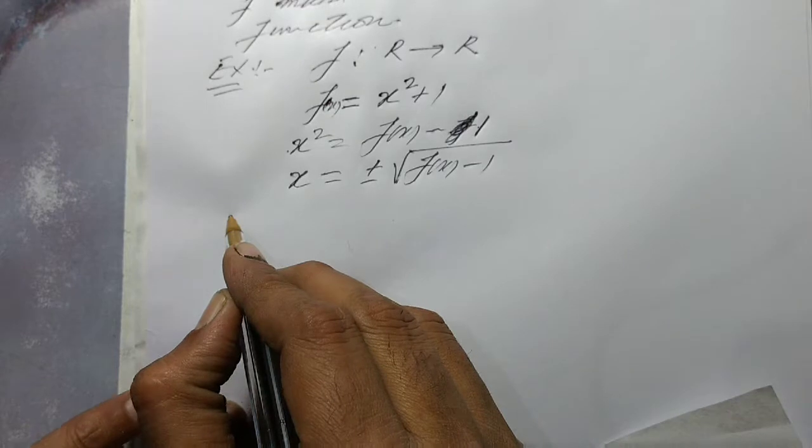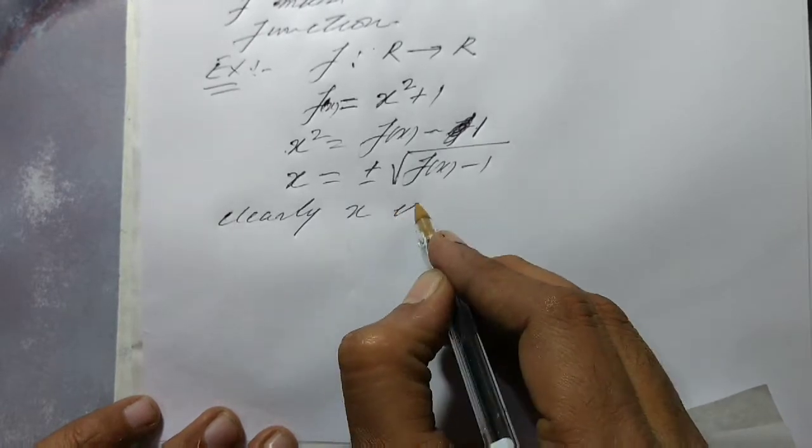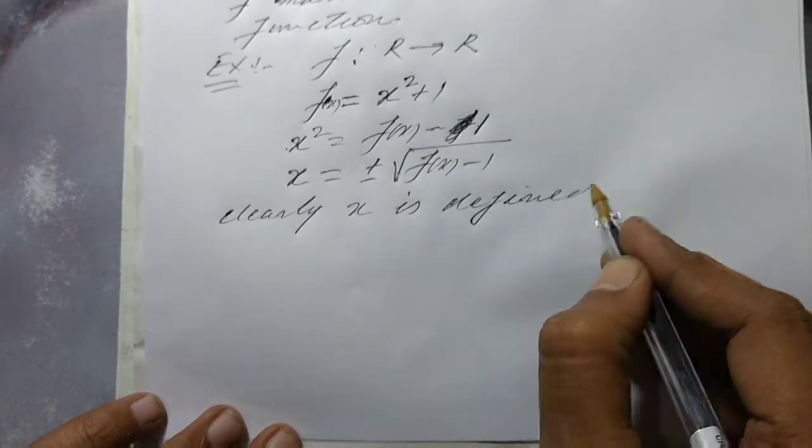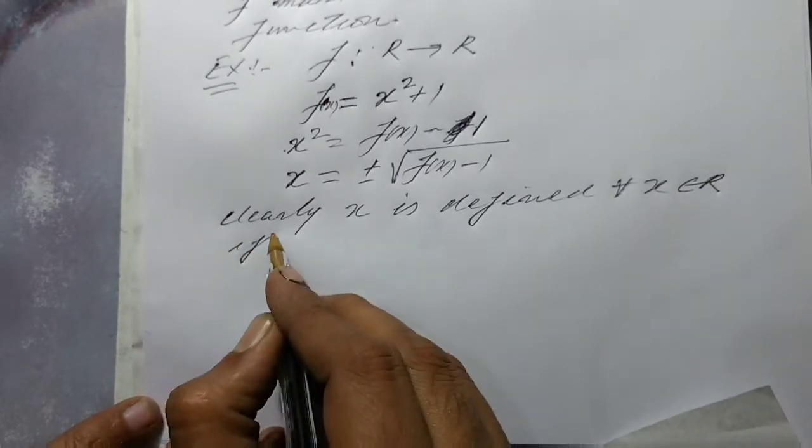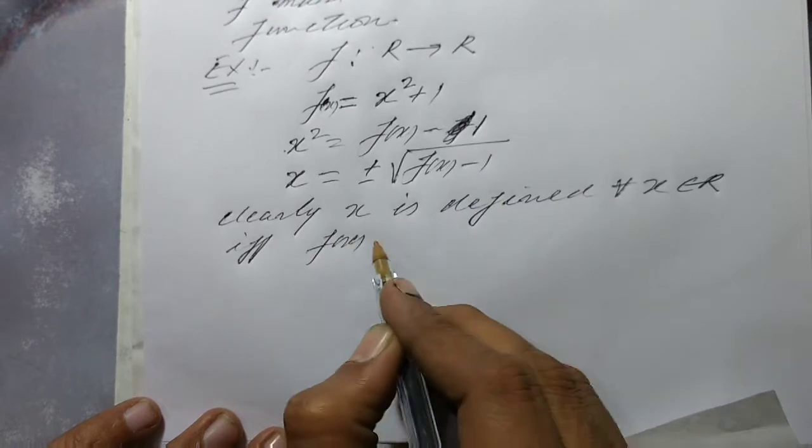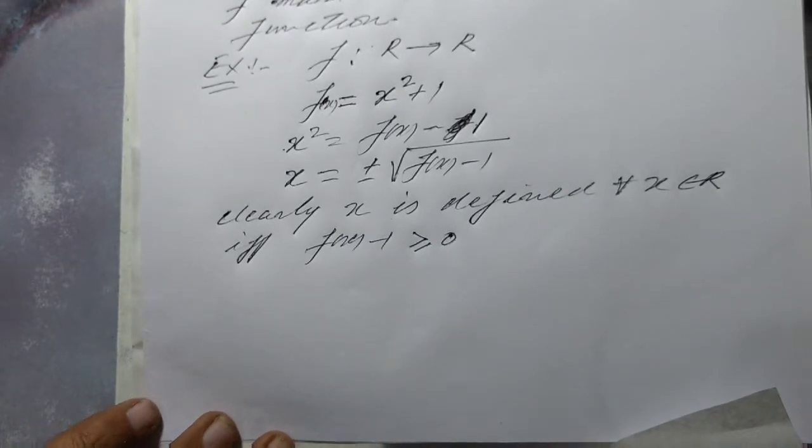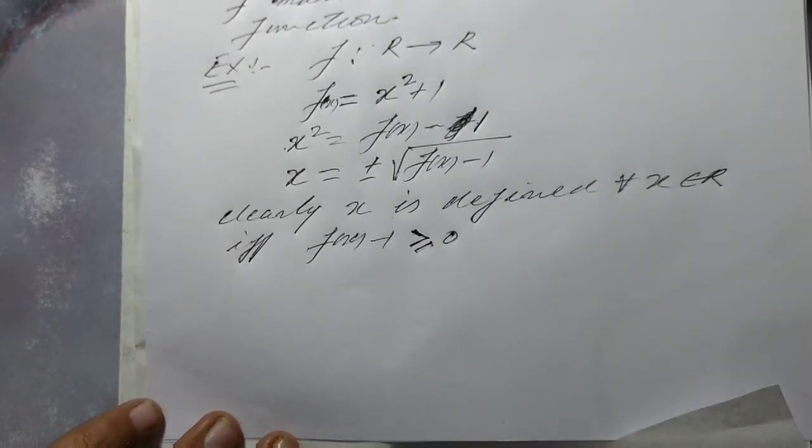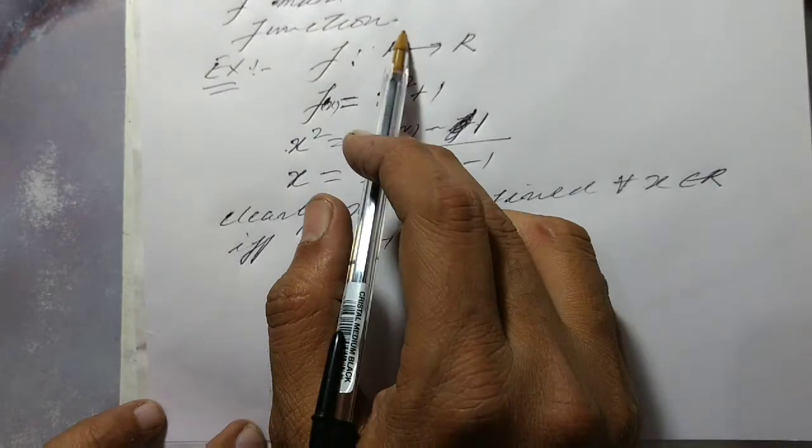Clearly, x is defined for all x belongs to R if and only if f(x) minus 1 is greater than or equal to 0, because negative number under the root, any negative number gives an imaginary number which is not a real number and our domain is real number.